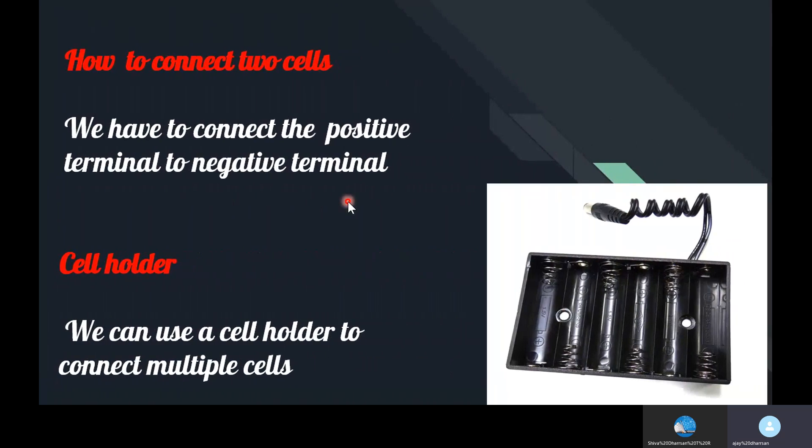There is a procedure how to connect two cells to form a battery. We have to connect the positive terminal of the cell to the negative terminal of the cell, so only the energy will be produced. If we connect negative to negative or positive to positive, it never works out. If you do not want to have hardwire connecting like this, you can use a cell holder. The cell holder is a thing that can connect multiple cells. This is a cell holder, this image.